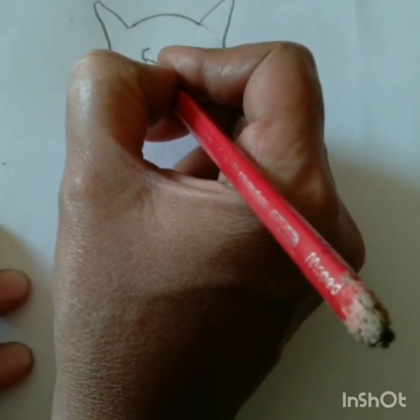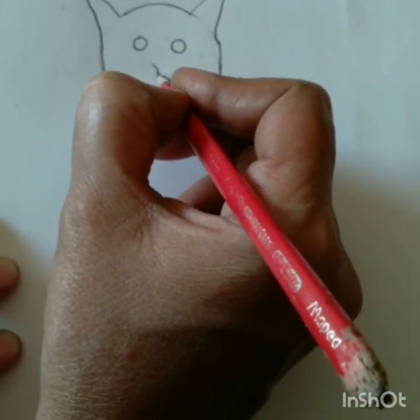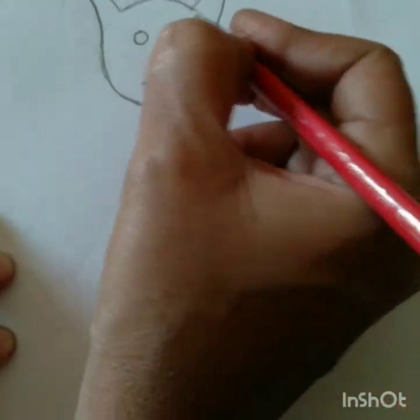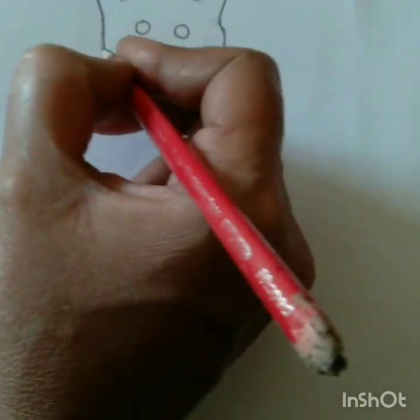Children, now we are drawing its eyes and mouth. Children, now we are drawing its whiskers. Both sides.